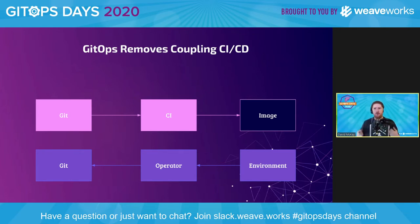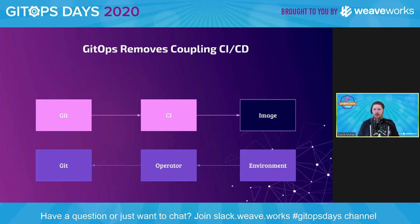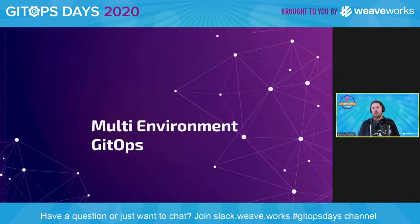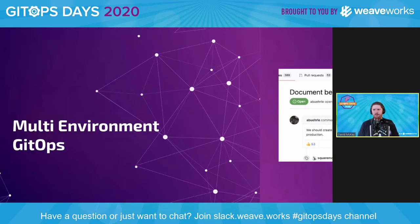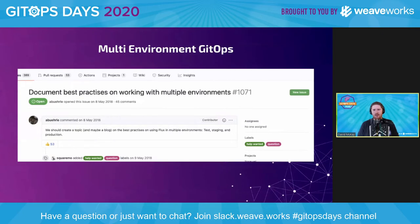We no longer have our CI system aware of all of our environments. We have a single image that could run across all environments, and this is a really strong benefit for GitOps. Now I want to talk about this multi-environment thing because it's kind of painful — a lot of people struggle with this.